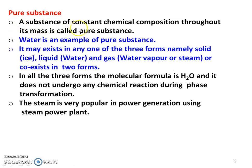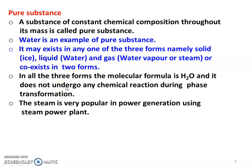Pure substance: a substance of constant chemical composition throughout its mass is called a pure substance. Water is an example of pure substance. It may exist in any one of three forms — solid form (ice), liquid form (water), and gaseous form (water vapor or steam) — or co-existing in two forms. The chemical formula H2O is constant throughout its mass, and water does not undergo any chemical reaction during phase transformation.